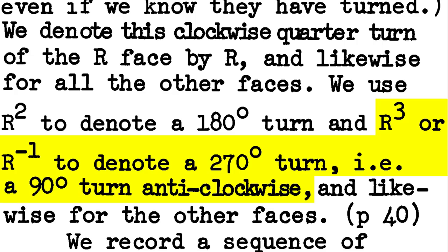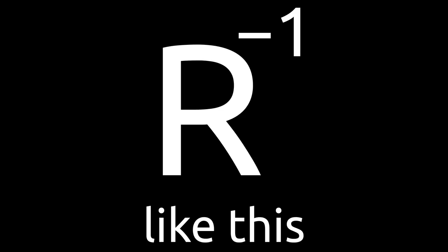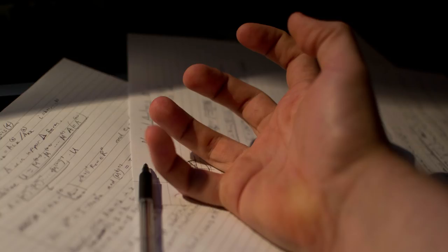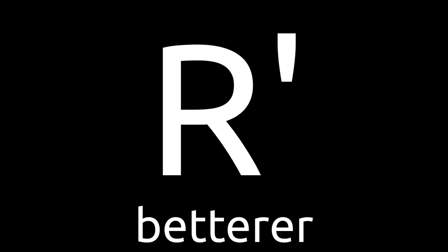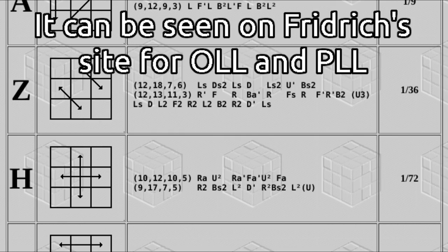Initially, Singmaster used a superscript minus one as his notation for an anti-clockwise move on the cube. This does make sense from a mathematical point of view — a superscript minus one generally denotes 'do the inverse of this function.' However, it is a bit cumbersome to write, and in his fifth addendum he concedes and uses an apostrophe or prime mark instead. Although he did come up with a slice move notation that lasted a while, it hasn't really survived into the modern day.